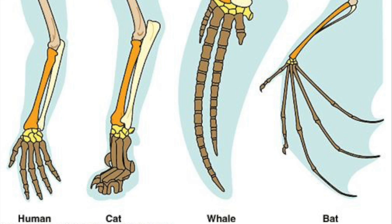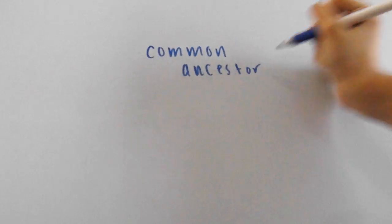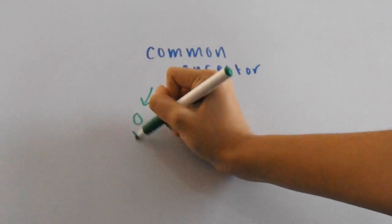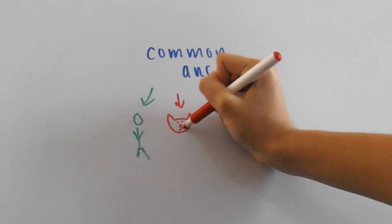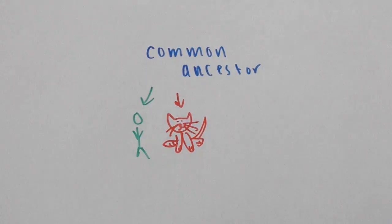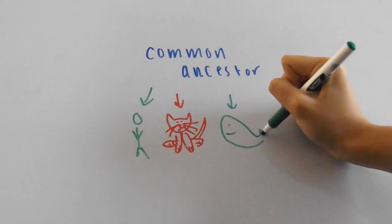A lot of textbooks also include the whale fin and bat wing, all of which have originated from a common ancestor long ago. All of these forelimbs are constructed from the same basic skeletal structures, even though they have different evolutionary adaptations.